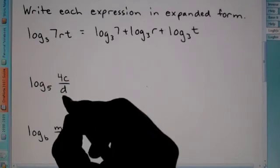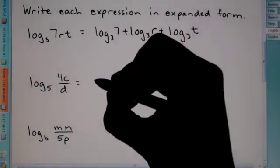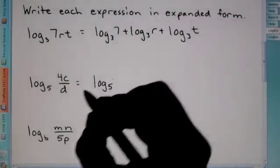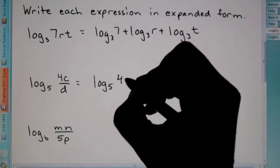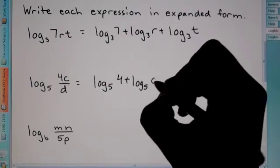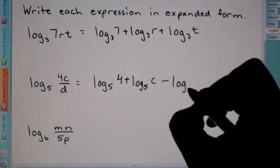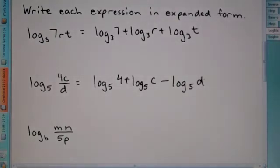Okay. Now, we have two terms being multiplied on top and one in the denominator. So, we're going to handle all our numerators first. Anything in the numerator gets a positive log. So, log base 5 of 4 plus log base 5 of c. And since d is in the denominator, it's minus log base 5 of d.